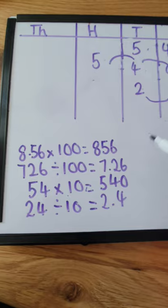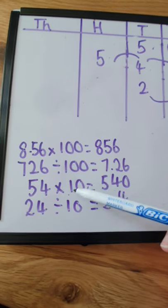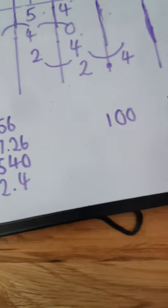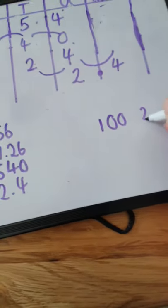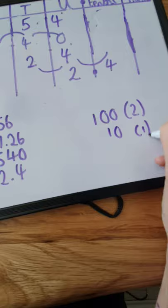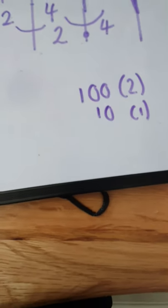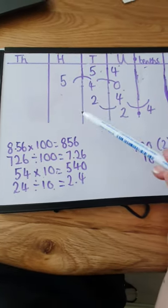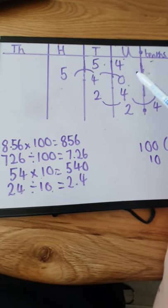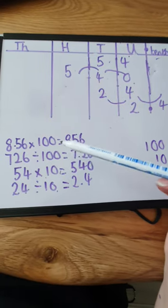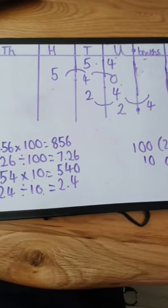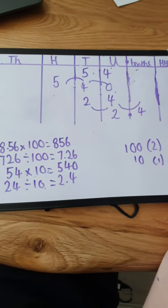So that is what you're going to do today — times-ing and dividing by 10 and 100. Remember: 100 changes value by two places, and 10 changes value by one place. If you remember those key facts it will help you. Draw this place value chart in your book and use it to help, or after a while you may be able to do this mentally. Good luck with today's learning.